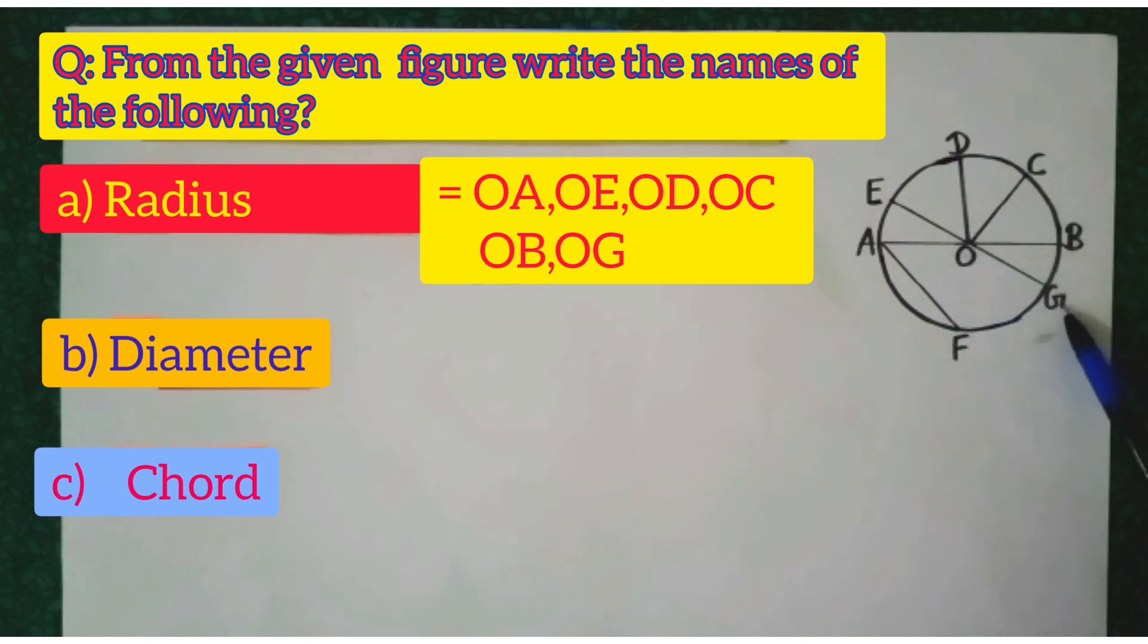Next, in the given circle, how many and which diameters are there? So two line segments are there which are passing from the center of the circle. It's AB and EG.